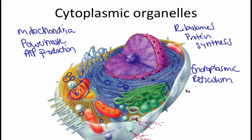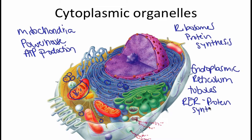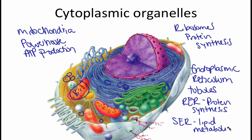The ER in general are fluid-filled tubules that allow for carrying different types of substances. Rough ER is specialized in protein synthesis, whereas smooth ER is specialized in lipid metabolism. In addition, it deals with the detoxification of drugs and other pesticides.